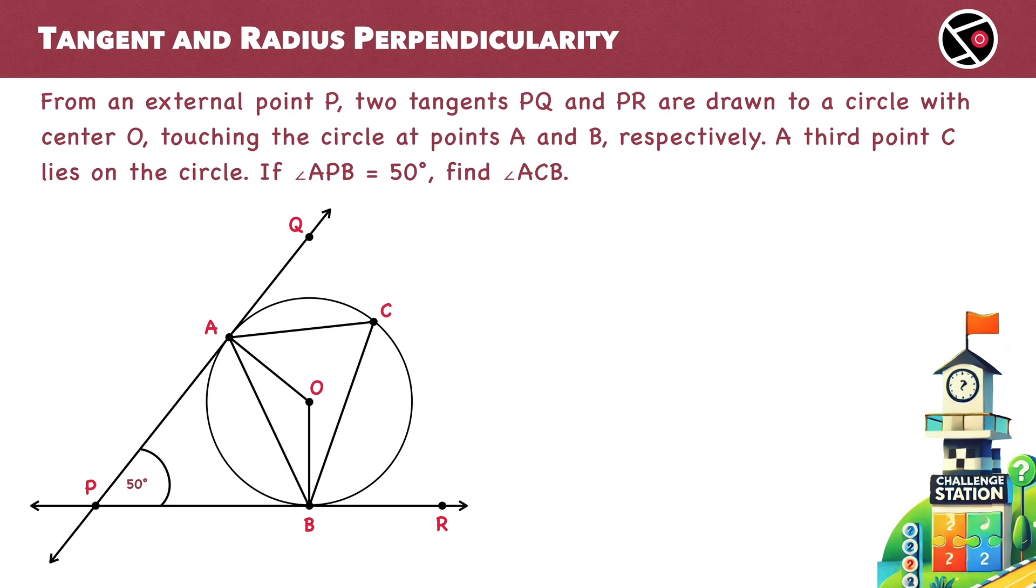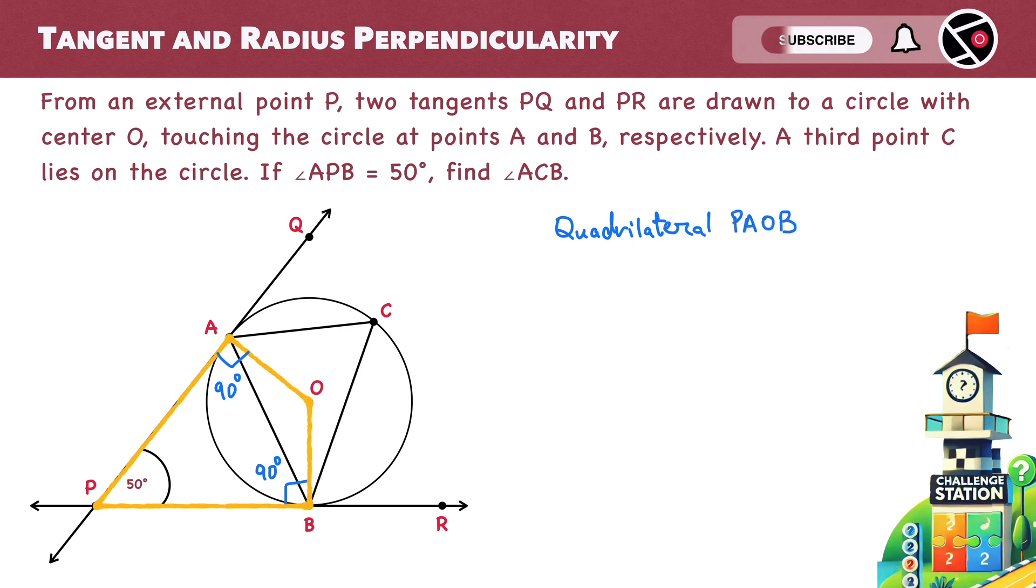All right, let's work through it. We have a circle with tangents. We just learned that tangents are perpendicular to the radius through the point of contact. So angle PAO equals 90 degrees and angle PBO also equals 90 degrees. What's next? Let's look at quadrilateral PAOB. We know the sum of interior angles of a quadrilateral is 360 degrees. We already have 50 degrees, 90 degrees and 90 degrees.